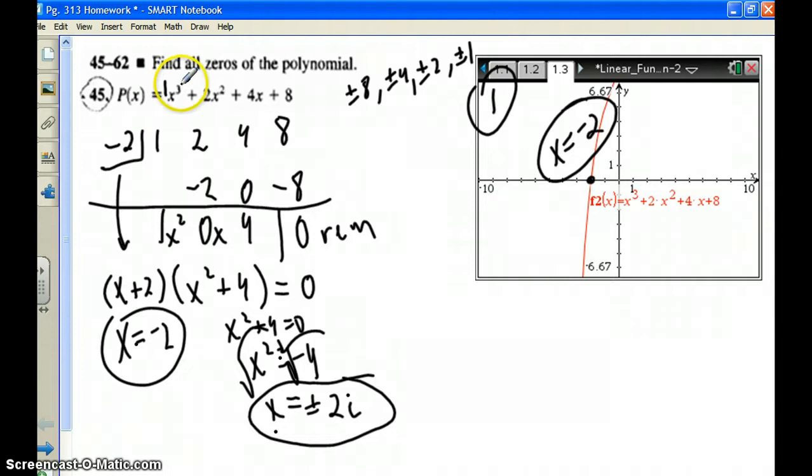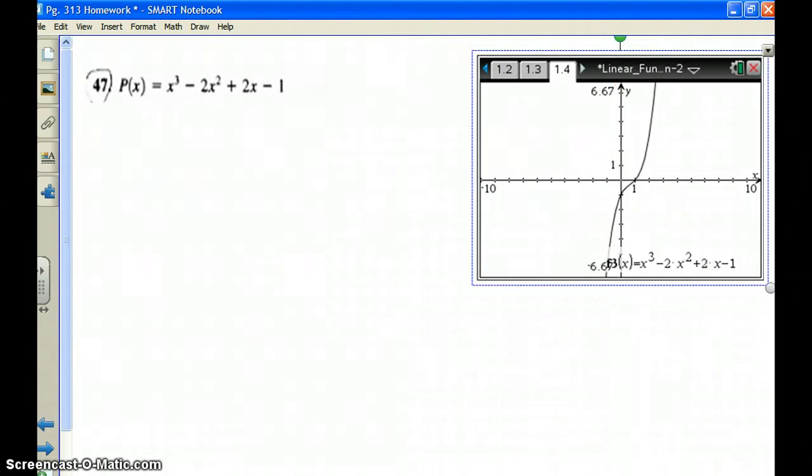So our other two solutions are imaginary there. Graph to the third power. That was to be expected. When it's to the third power, you want to get one rational root from the graph. Synthetically divide it out. Take your answer. Either use quadratic formula or just say it equals 0 if it's an easier problem like that one.